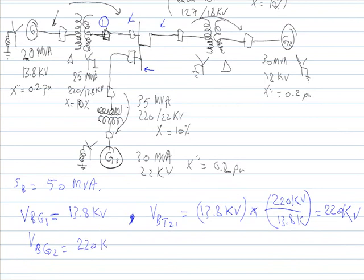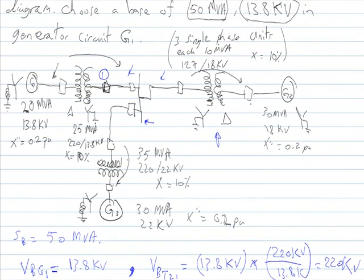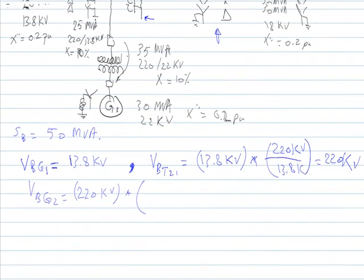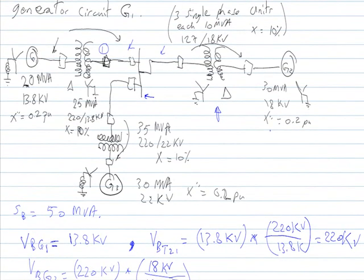The base voltage on generator number two is the base voltage of the transmission line multiplied by the turns ratio of transformer number two: 18 kV over 127 kV on the secondary side. Since this is a bank of three single-phase units, the voltage per phase must be multiplied by root three to convert to line voltage.